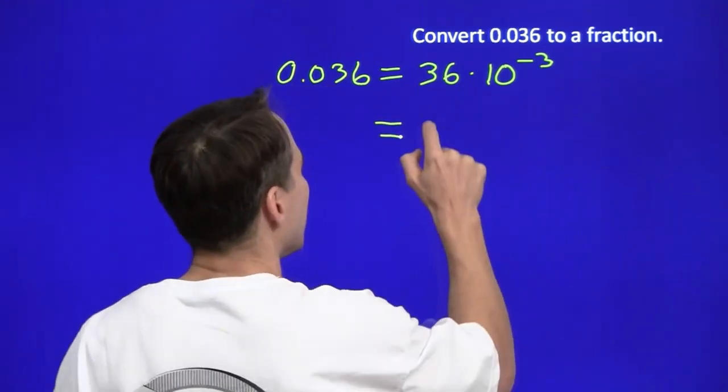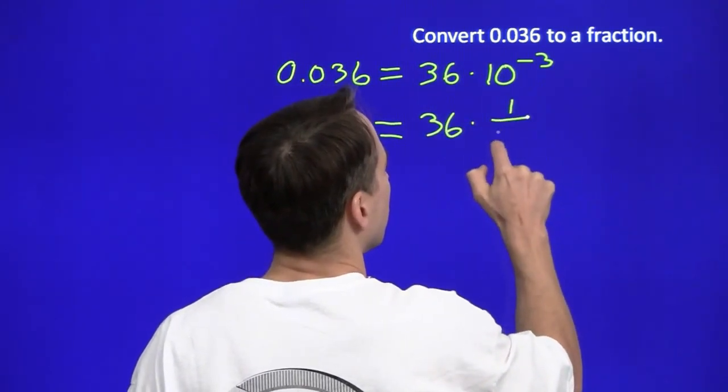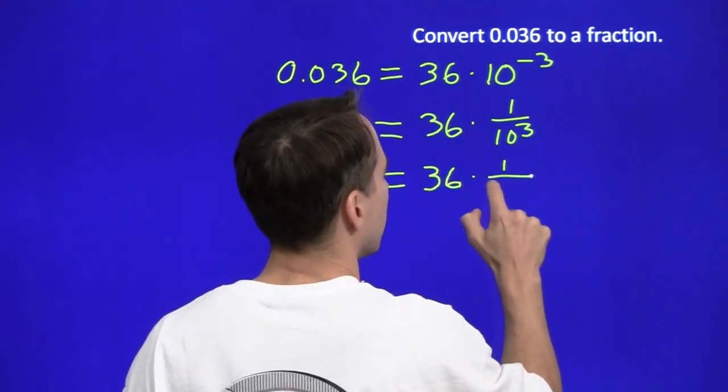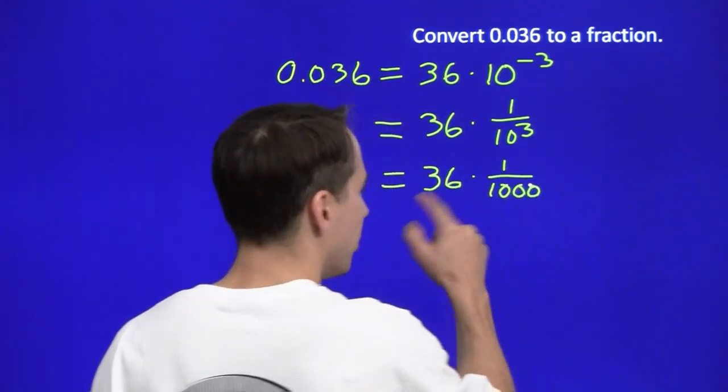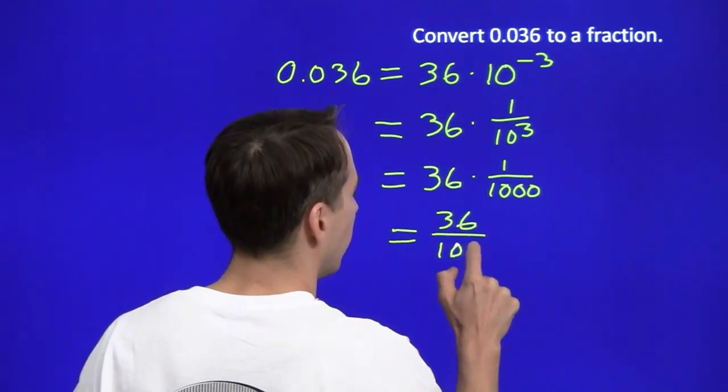Of course, 10 to the minus third, that's just 1 over 10 cubed, which is 1 over 1,000. And 36 times 1 over 1,000, that's just 36 over 1,000.